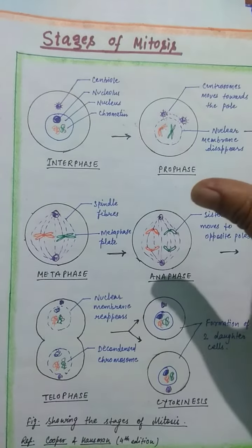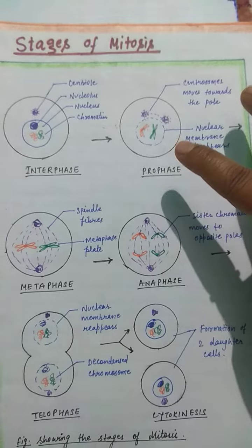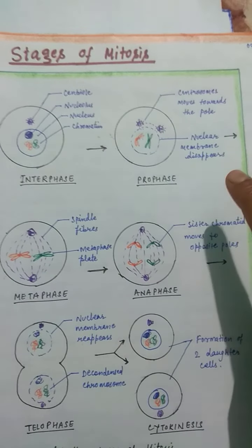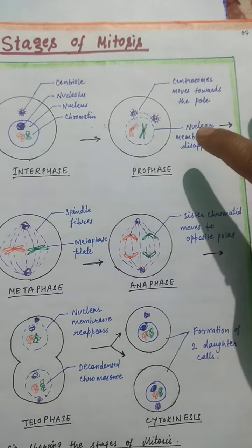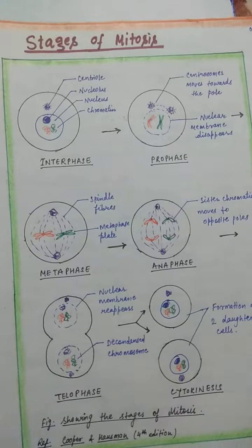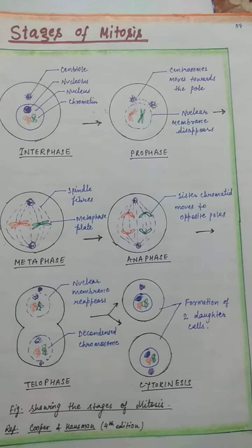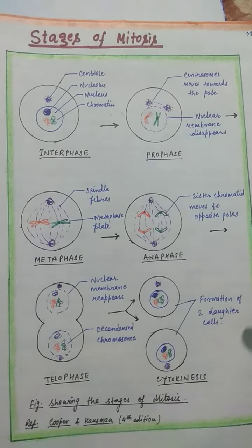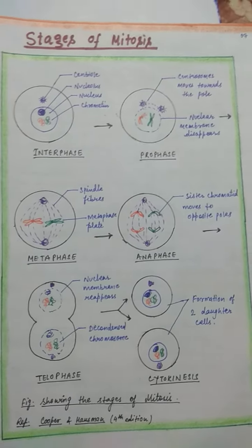Looking at the figure: in interphase, there are nucleolus, nuclear membrane, and chromatin in decondensed form, with centrioles present. In S phase, two centrioles are present and chromosomes condense into two chromatids. In prophase, the nuclear membrane disappears and centrioles move to the two poles. In metaphase, chromosomes are aligned with spindle fibers attached to both poles. In anaphase, chromatids separate and move toward the poles. In telophase, the nuclear membrane reappears and chromosomes decondense. Finally, cytokinesis produces two daughter cells.